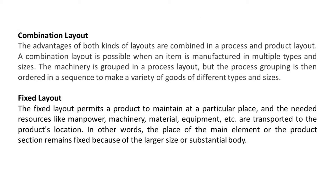Combination layout. The advantages of both kinds of layouts are combined in a process and product layout. A combination layout is possible when an item is manufactured in multiple types and sizes. The machinery is grouped in a process layout, but the process grouping is then ordered in a sequence to make a variety of goods of different types and sizes.